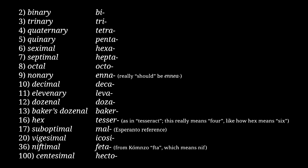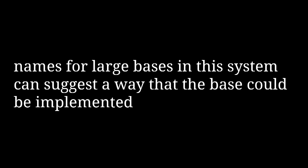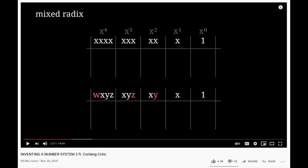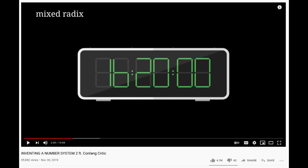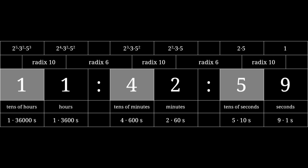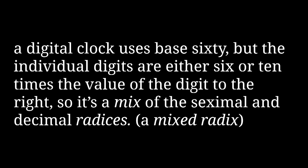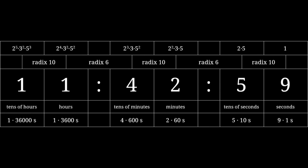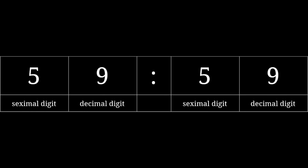Another thing that makes naming bases according to their factors useful is that when you're dealing with a really large base, it's somewhat impractical to have unique symbols and names for every single digit. One solution to this problem is mixed radix — this means the factor that determines the value of each position relative to adjacent positions isn't always the same. The go-to example is a digital clock, where some digits are 10 times the value of the digit to the right, but others are 6 times. This is using base 6 and base 10 together as an intuitive way to use base 60 without needing 60 distinct digits. And since in my system bases are named according to their factorization, the name itself tells you which radices you can mix together. The canonical factorization for 60 is 6 times 10 — the exact pair used by digital clocks — so we take decimal and add the multiplicative prefix for 6, hexa, and get hexadecimal.